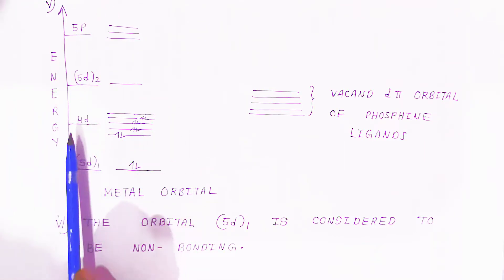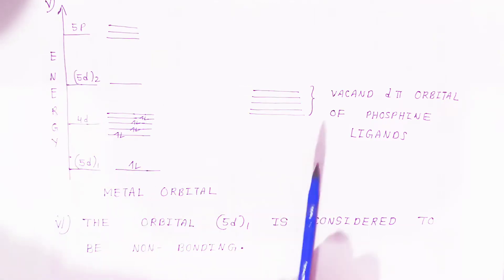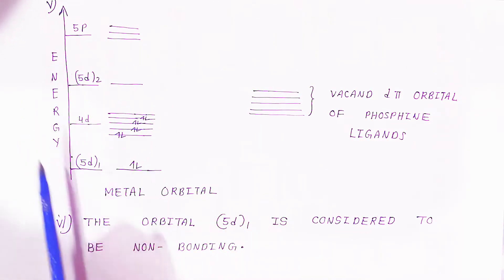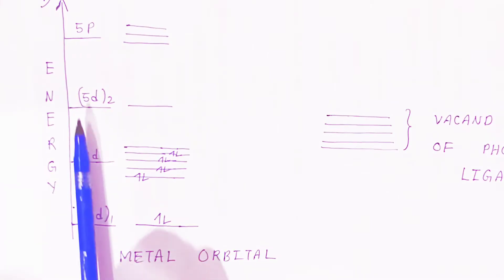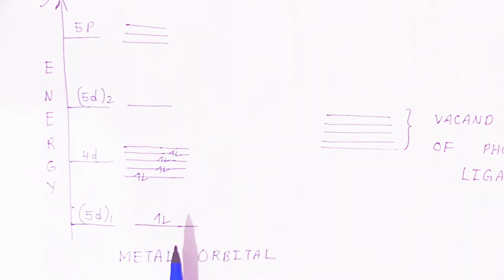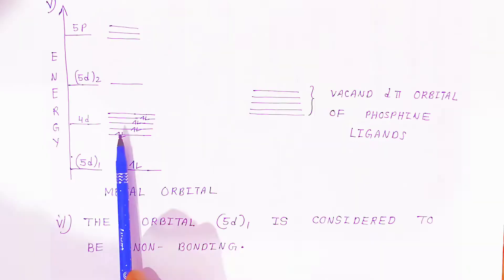These are the metal orbitals: 4d, 5s, 5d, and 5p. The 4d has paired electrons distributed in the sub-atomic orbitals of 4d.